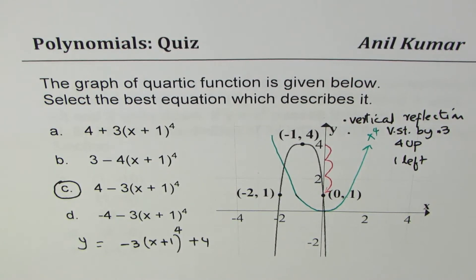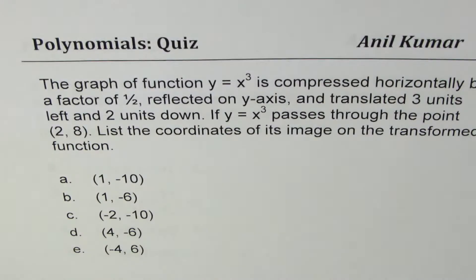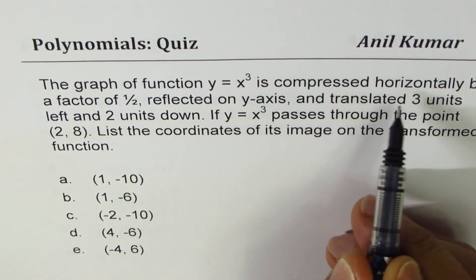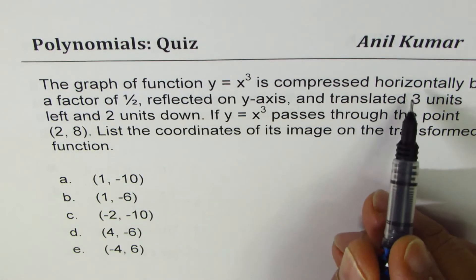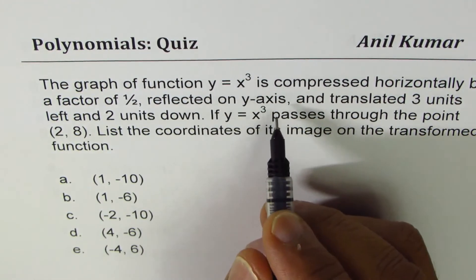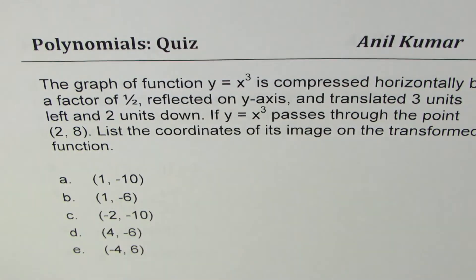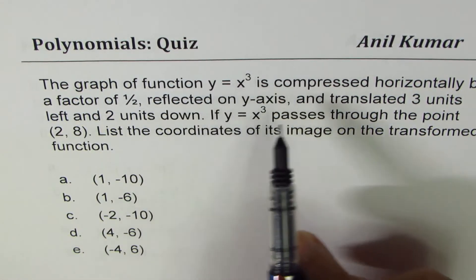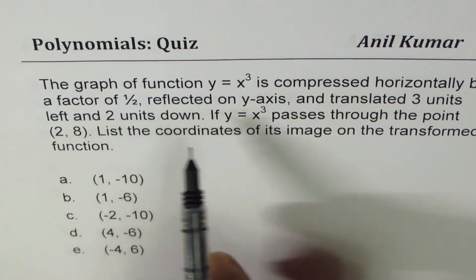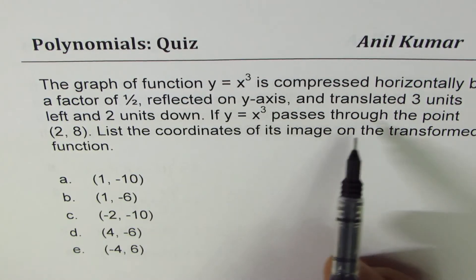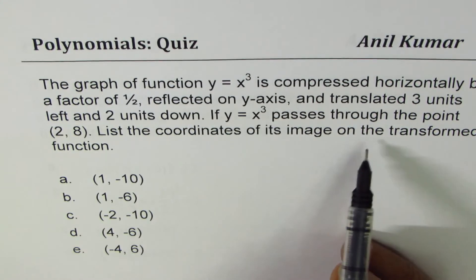Let's move on to the next question on transformations. The graph of function y equals x cube is compressed horizontally by a factor of half, reflected on the y-axis, and translated three units left and two units down. If y equals x cube passes through the point (2, 8), list the coordinates of its image on the transformed function. We are given the original point — we need to find the image.